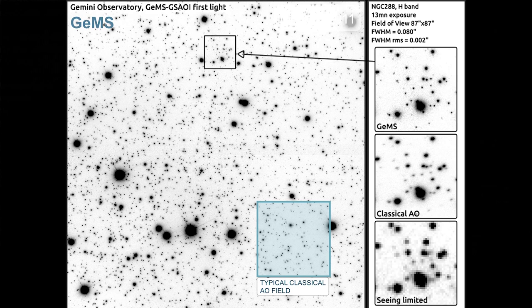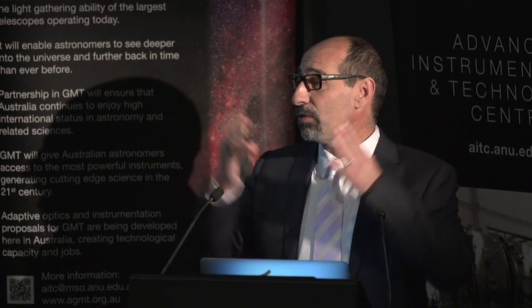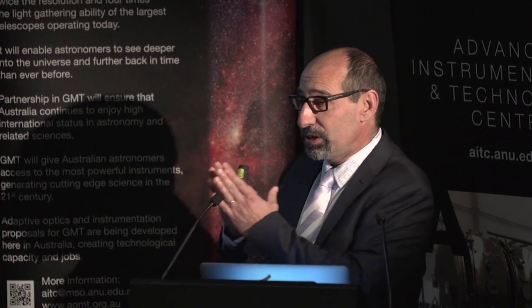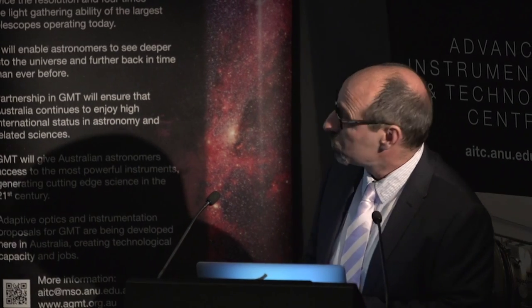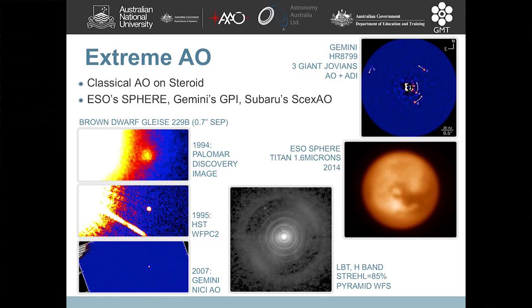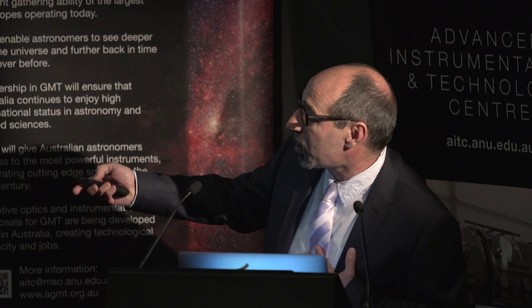Adaptive optics has diversified into different types. Some provide moderate resolution gain over a wide field; others study planets with a very small field but pursue very high image quality. One exciting application is imaging brown dwarfs and exoplanets — this Brown Dwarf GL 299, discovered by Palomar and imaged by HST, can now be imaged far more clearly from the ground with 8-meter telescopes, superior even to space, due to precise control of scattered light.